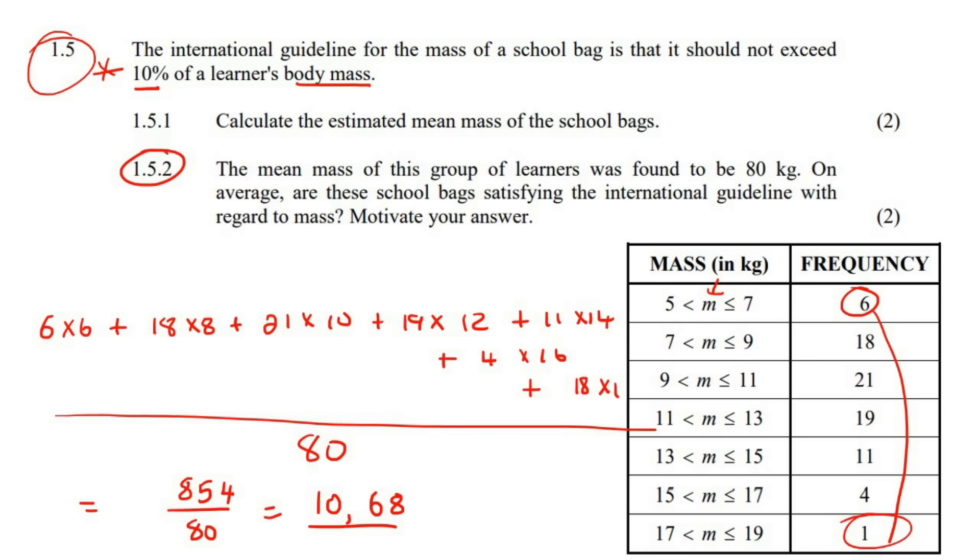This question says that the mean mass of these learners was found to be 80 kilograms. So there's 80 learners. So don't get confused with this 80 and the 80 learners. That's just a coincidence. So the average of these kids is about 80 kilograms. So on average, are their school bags satisfying the international guideline? Well, what we need to do is work out what out of the person's average weight or mass, sorry. For those of you that do physics, you know mass and weight is different. So I just made a critical error there. But that's not important right now. So most learners are 80 kilograms, but the average bag mass is 10.68. So if you had to work that out and then to get a percentage, you obviously say times 100.